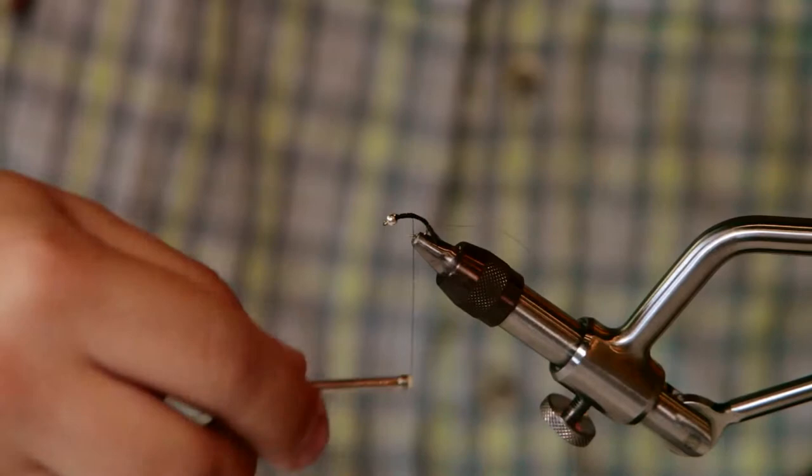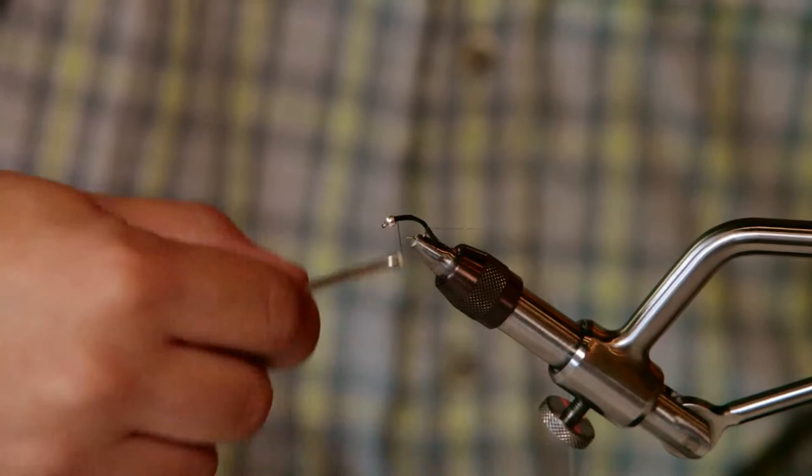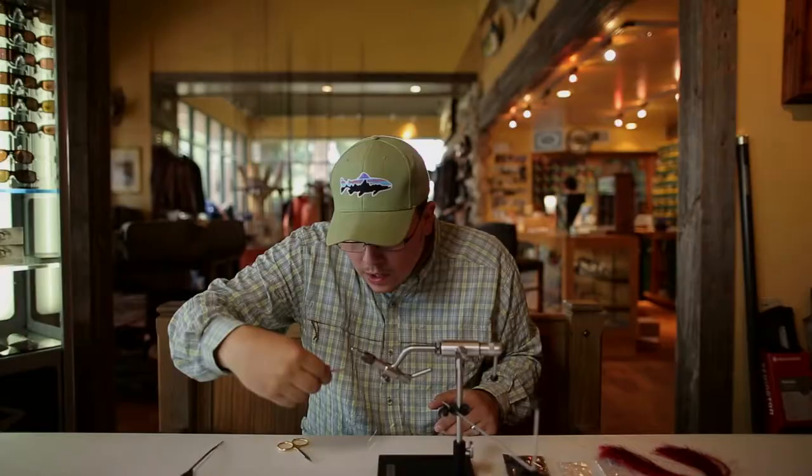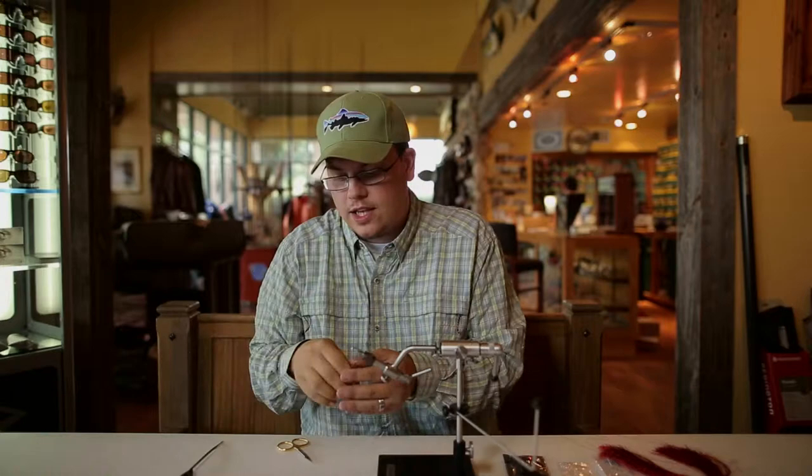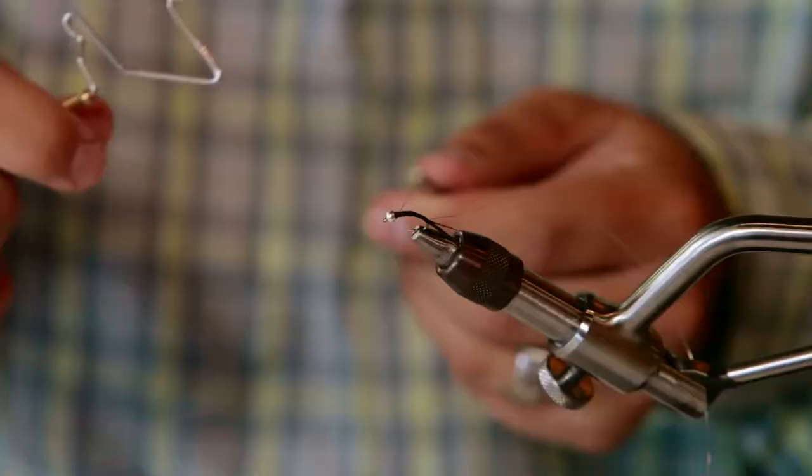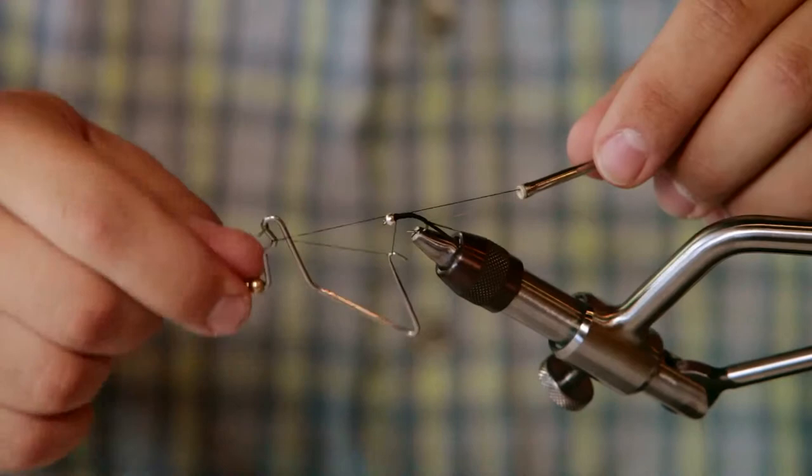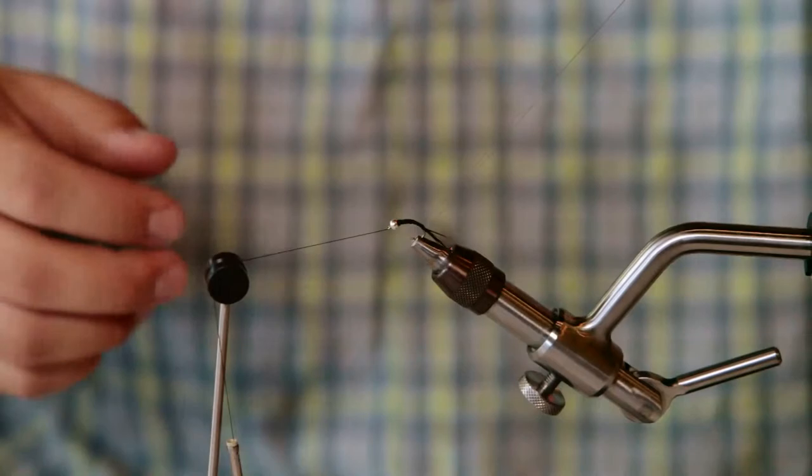And I want to cover up everything that I just tied in. So what I'm going to do is cover all that up and start tapering the body slightly as I move forward. Once I got that done I'm going to whip finish at the head just so I can secure my thread, and put that in my thread holder.